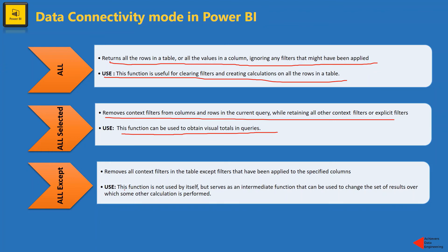Moving to ALLEXCEPT: it removes the context filters in the table except the filter applied to the specified column, so it ignores all filters and follows only the filter specified within that DAX. This function is not used by itself but serves as an intermediate function that can be used to change the set of results over which some other calculation is performed. Note that these functions might not work properly when used in direct query mode or row-level security. I'll mention a link in the description for the Microsoft documentation.